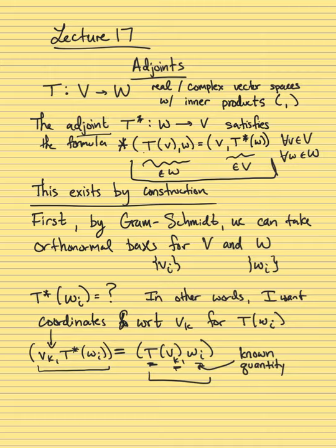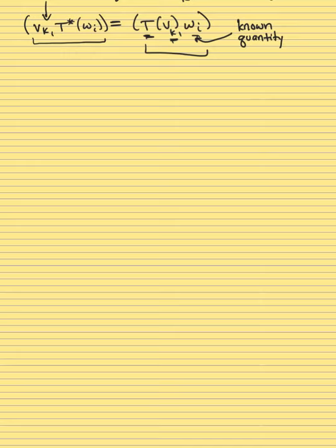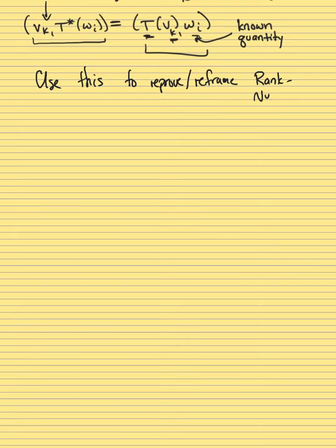As noted, if you were looking at something from R^n to R^m, this would just be the transpose of the matrix, or for C^n to C^m, it would be the conjugate transpose. So what we're going to do now is use this to reprove or reframe — and actually give more information about — the rank-nullity theorem.